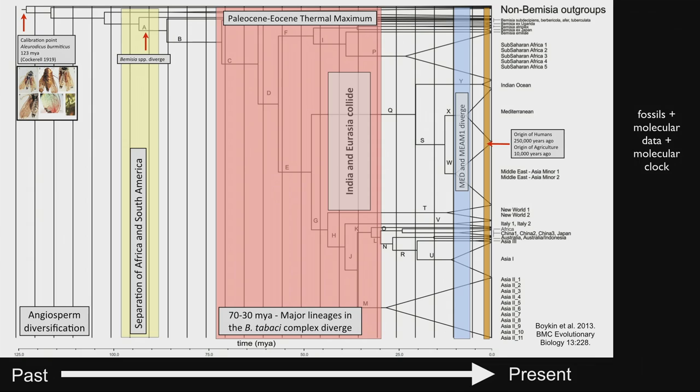I also use these phylogenetic trees and whitefly fossil information to study the evolution of whiteflies. There's time across the bottom from past to present, and the blocks in color indicate major historical events. The take-home message is that whiteflies have been around for a really long time — millions of years — so our solution must take this into account.